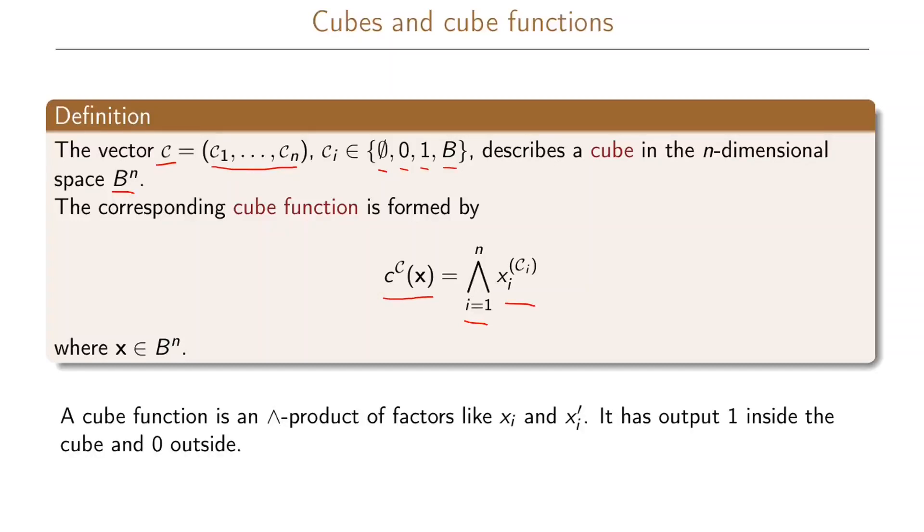So the cube function here will be an AND product of factors that are either x_i or x_i prime, and it will have output 1 inside the cube and output 0 outside the cube. So let us look at an example of this.